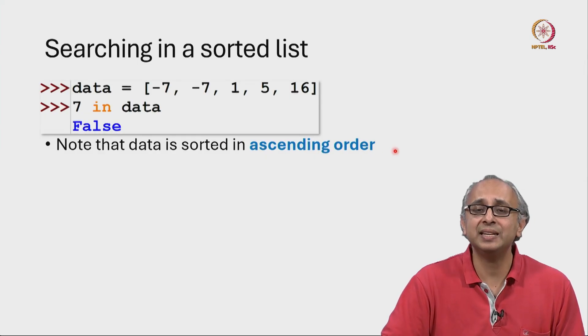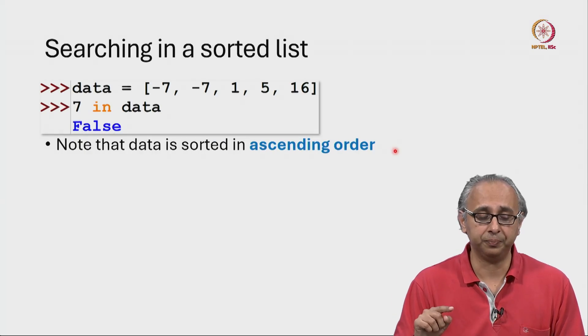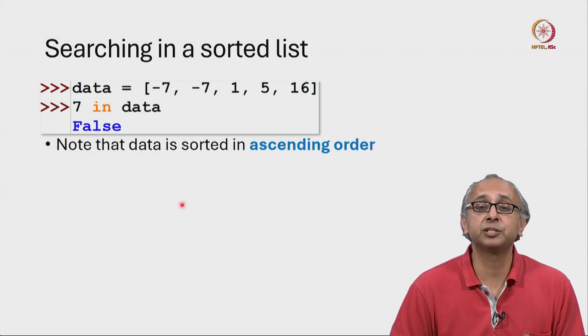Similarly, in descending order, the values can never increase. They could go down. Now, if we know that the list is sorted,